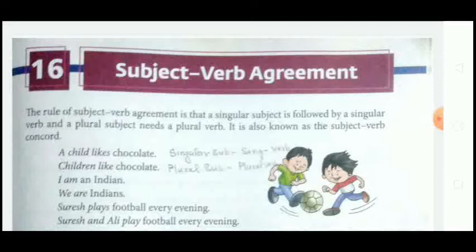'We are Indians' — here the subject 'we' means it is plural (more than one), so the verb 'are' is used in plural form. Next example: 'Suresh plays football every evening' — here 'Suresh' is a singular person, so the subject is singular and the verb 'plays' is also singular.